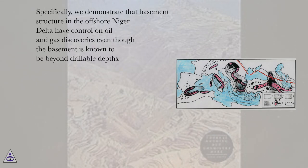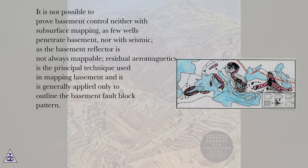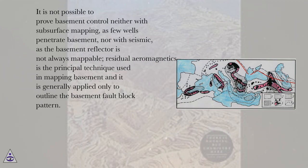Specifically, we demonstrate that basement structure in the offshore Niger Delta has control on oil and gas discoveries, even though the basement is known to be beyond drillable depths. It is not possible to prove basement control either with subsurface mapping, as few wells penetrate basement, nor with seismic, as the basement reflector is not always mappable. Residual aeromagnetics is the principal technique used in mapping basement and is generally applied only to outline the basement fault block pattern.